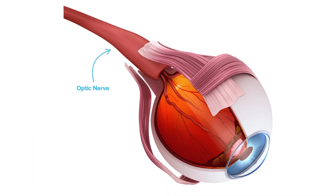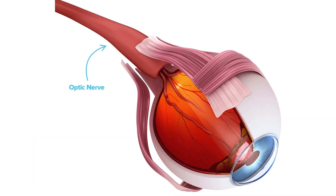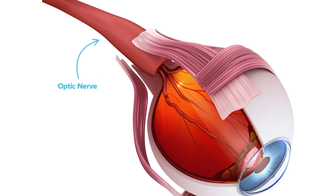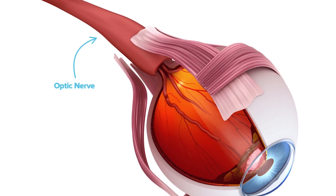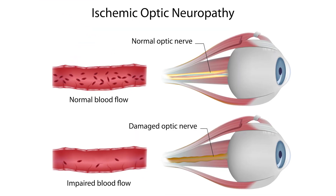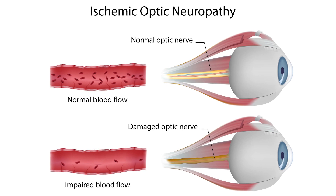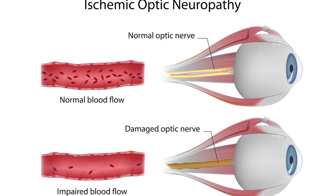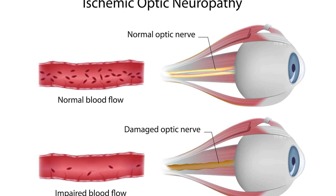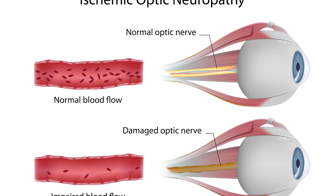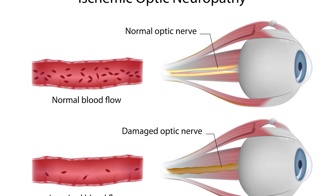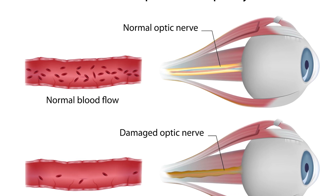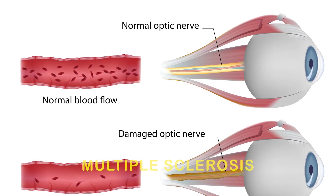In the case of optic atrophy, something is interfering with the optic nerve's ability to transmit these impulses. This can be like a stroke of the optic nerve, known as anterior ischemic optic neuropathy. A tumor that is pressing on the optic nerve. Or optic neuritis, which is an inflammation of the optic nerve caused by multiple sclerosis.